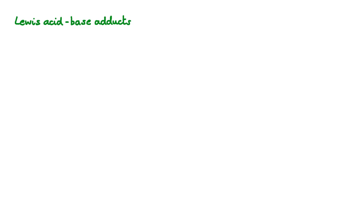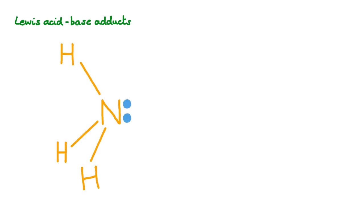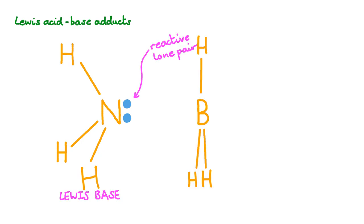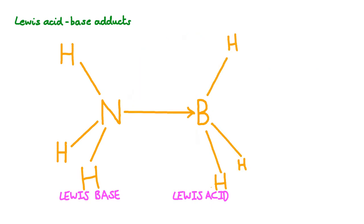When a Lewis acid reacts with a Lewis base, they form what's called a Lewis acid-base adduct. Here's an example of a Lewis base — ammonia. Ammonia has a reactive lone pair. And here's a Lewis acid, BH3. At the centre of the BH3 molecule is a boron atom that can accept electrons. So we predict that the nitrogen will form a bond with the boron, and the molecule we get is called the Lewis acid-base adduct.